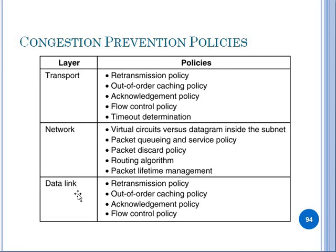At the data link layer, policies include retransmission policy — when a packet is converted to a data frame and arrives out of order, we retransmit the packet — and flow control policy. We will see more in the next lecture. Thank you, students.